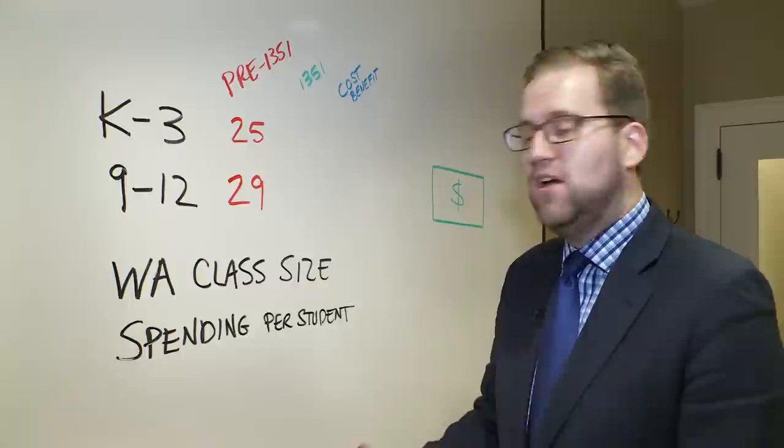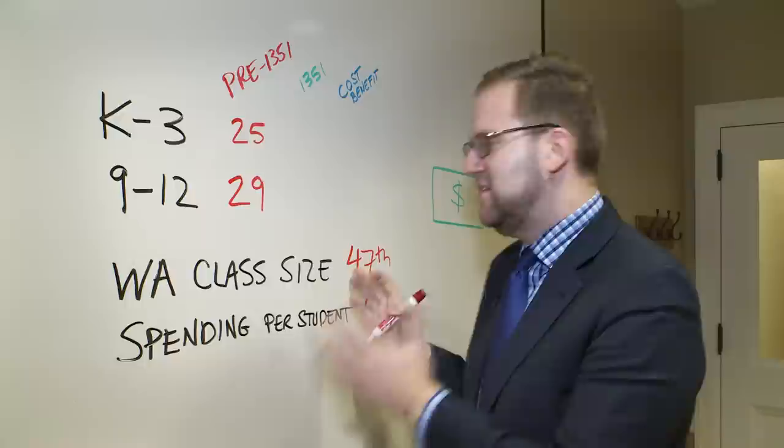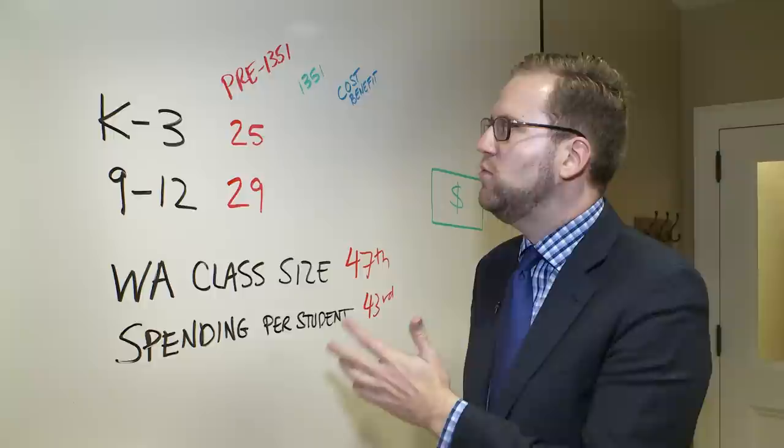Here's some of the basic statistics on class size. First of all, Washington State today is 47th worst in class size across the country, and we're 43rd in the amount we spend per student in our classrooms. This is not a great situation, which is why voters justifiably took action to make sure we're reducing class size.